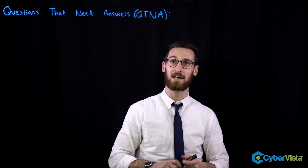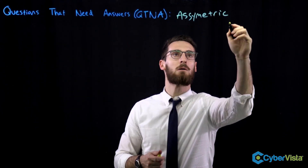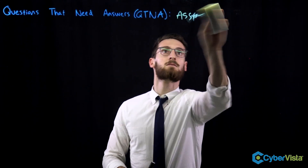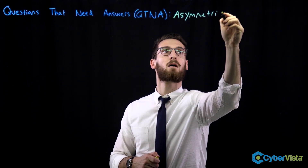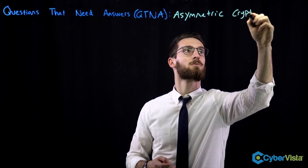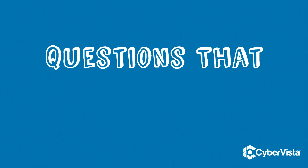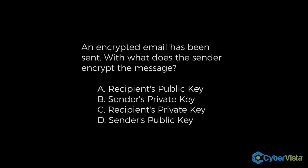And today's question that needs an answer is... I think I spelled that wrong. There's no spellcheck on the lightboard, so it's really not my fault. An encrypted email has been sent. With what does the sender encrypt the message?